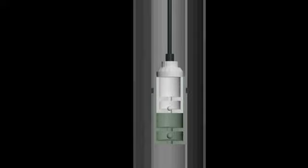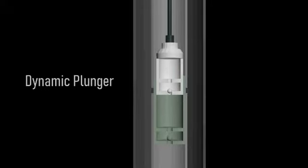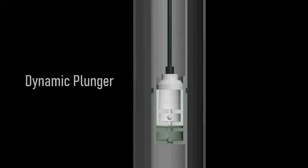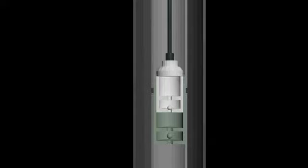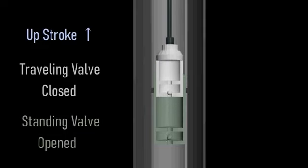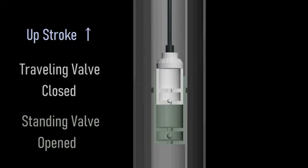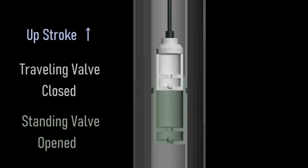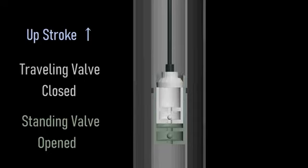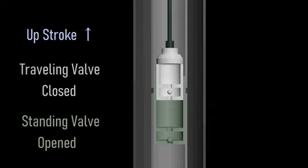The main components of the subsurface equipment are a dynamic plunger with its traveling valve, and a stationary working barrel with its standing valve. During the upstroke, a suction pressure is created at the standing valve of the working barrel, forcing that valve to move upward and enabling the flow of formation fluid into the inside of the working barrel. The traveling valve is held closed by the weight of the overlying fluid column.